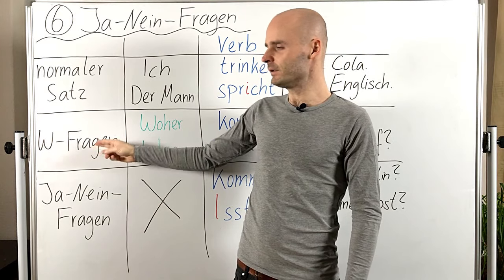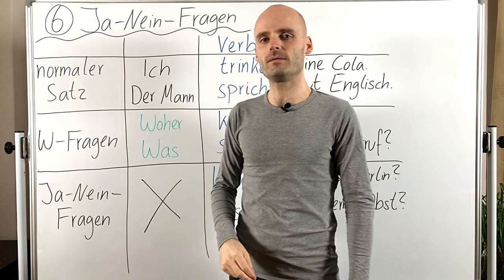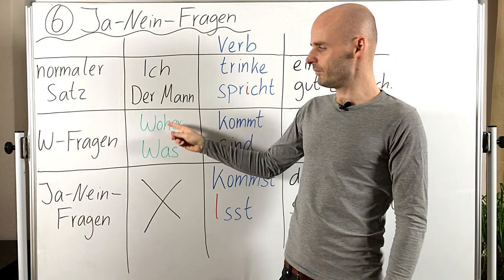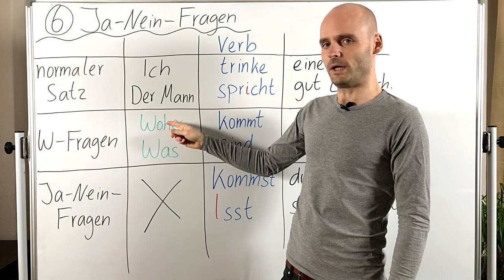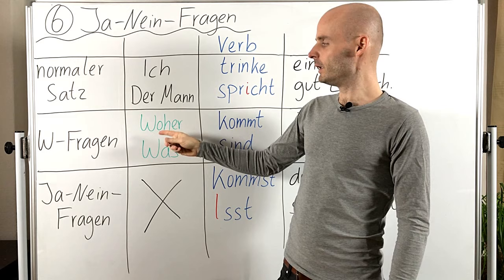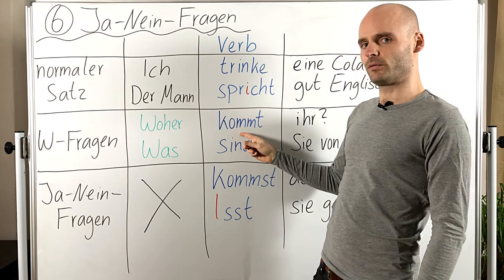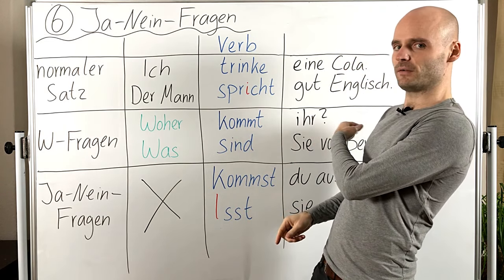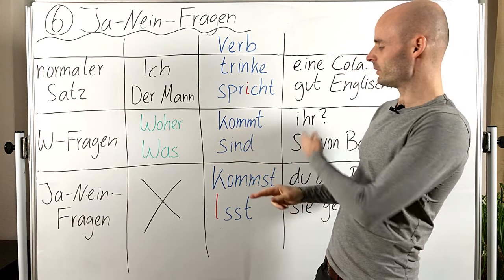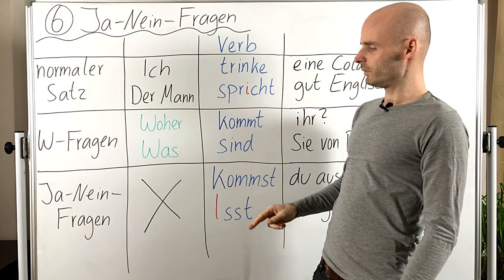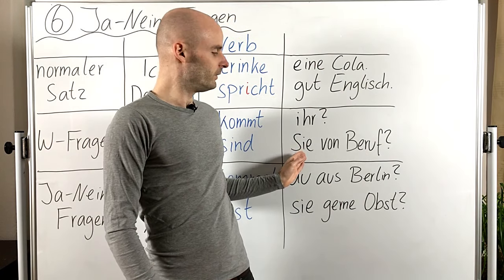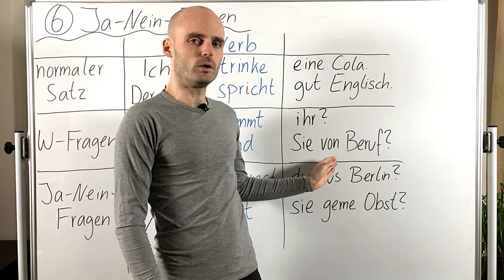Bei W-Fragen steht das Verb auch in Position 2. Das W-Wort steht in Position 1: Wo, woher, wohin. Das Verb in Position 2, und dann kommt der Rest. Also: Woher kommt ihr? Oder: Was sind Sie von Beruf?